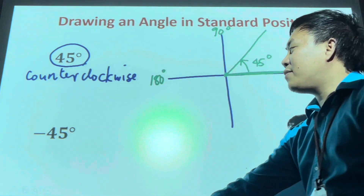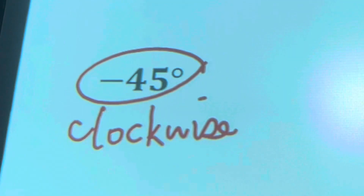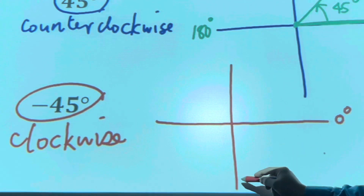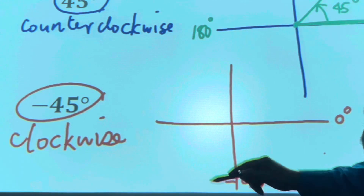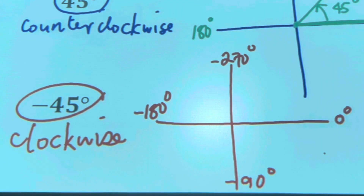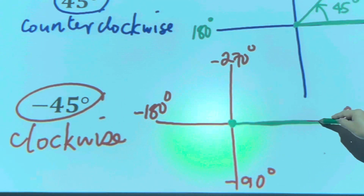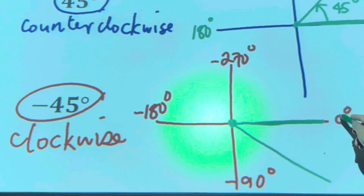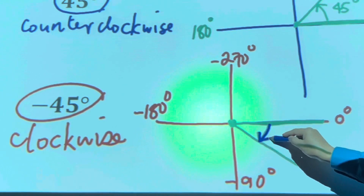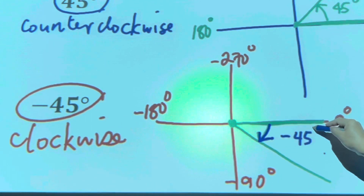Next is negative 45 degrees. Since the angle is negative, we move in a clockwise rotation. Draw the Cartesian plane. Since it's negative, we start at zero degrees and go clockwise: negative 90 degrees, negative 180, negative 270 degrees. Since 45 is between zero and 90, the terminal side terminates between zero and negative 90. Draw the arrow in a clockwise direction and label it negative 45 degrees.